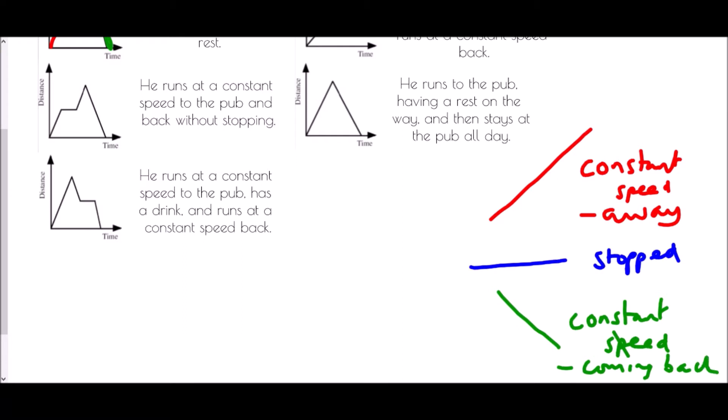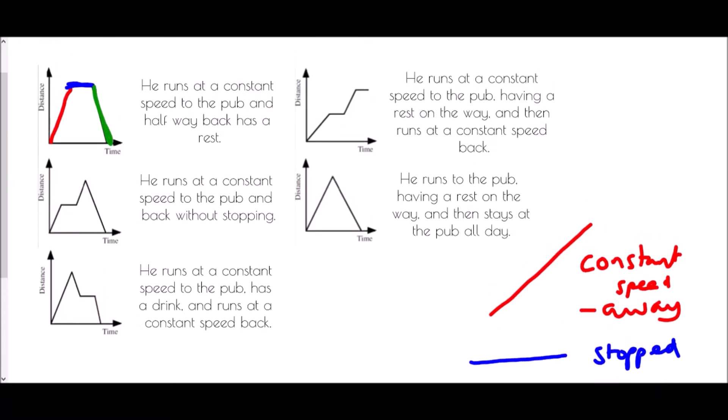So that is going to help us decide which of the five descriptions matches the graph. In the first one, Ron has jogged at a constant speed away, paused, and then come straight back. So he runs at a constant speed to the pub and halfway back has a rest — that doesn't match. He runs at a constant speed to the pub and back without stopping — we've said he definitely stops, so not that one. He runs at a constant speed to the pub, has a drink, and runs back at a constant speed — that one would definitely match.